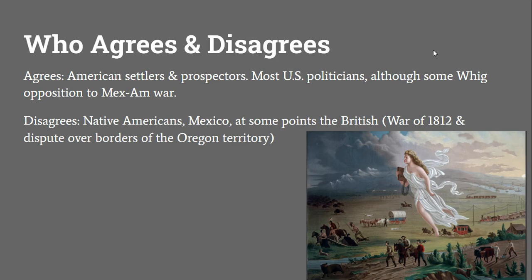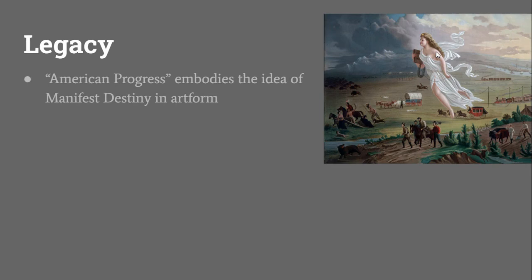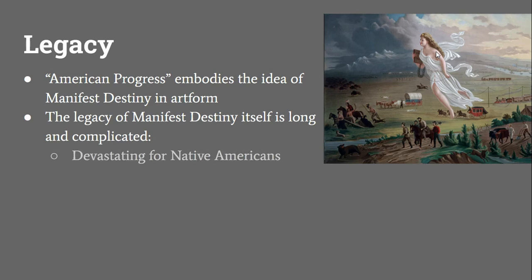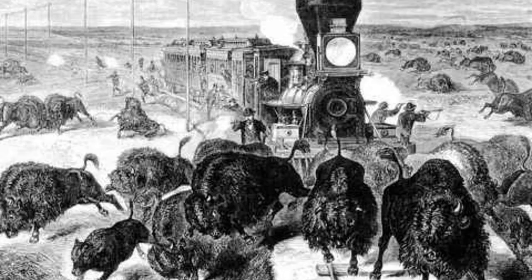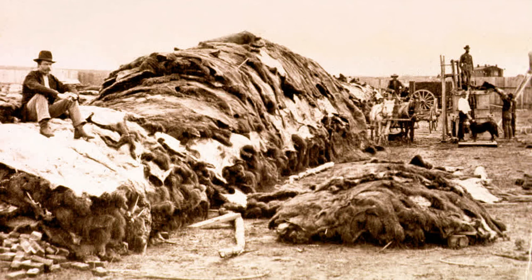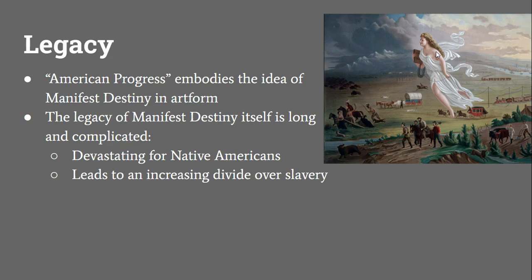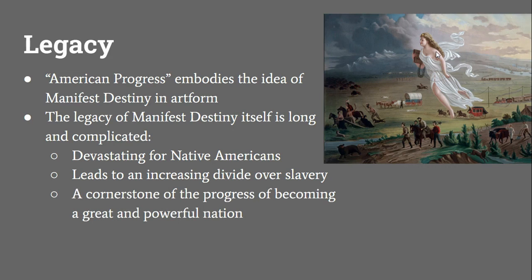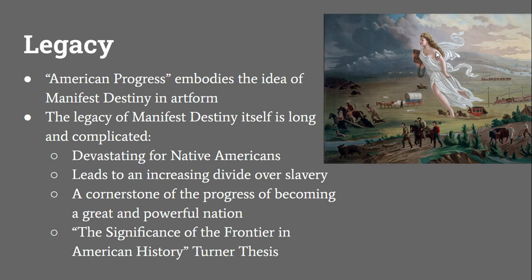Finally, the legacy of the painting and Manifest Destiny. The painting itself embodies the idea of Manifest Destiny in art form — no other image is used more to depict it. The legacy of Manifest Destiny is long and complicated. Manifest Destiny was devastating for many Native Americans, who were on the losing end of many wars, which added on to incredible losses suffered due to disease. For the Plains Indians, white hunters using the railroad destroyed their main resource, the buffalo, leading to many starving to death. For the United States itself, it also leads to division, with major questions about whether slavery should be expanded into the new territories and states, helping lead to an increasing divide and eventually the Civil War. However, the capture of lands and resources by the United States is a cornerstone of progress towards becoming a great and powerful nation, as exemplified in the famous Turner Thesis, 'The Significance of the Frontier in American History,' which is also an important primary source for APUSH.